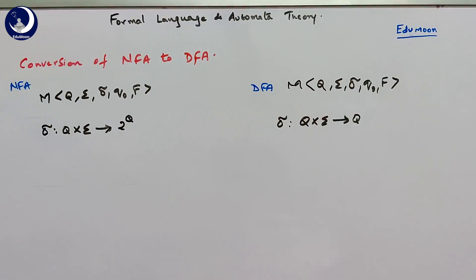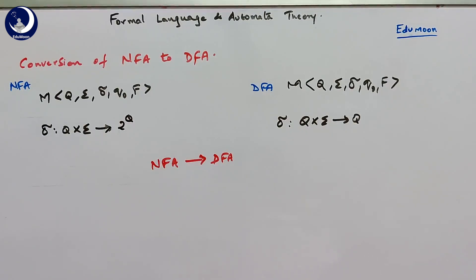Using the conversion process we are going to discuss now, when we find the equivalent DFA for an NFA, the tuples will change. If the NFA contains Q states, the number of states in the DFA will be greater than Q. All the states in Q dash are basically subsets obtained from the NFA — when we combine multiple states into a single state, we obtain a new state in the DFA.